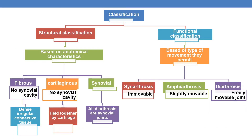Coming to the classification of joints: joints are broadly categorized into two types — based on structure and based on function. That is, structural classification and functional classification. Structural classification is based on anatomical characteristics, whereas functional classification is based on the type of movement they permit.